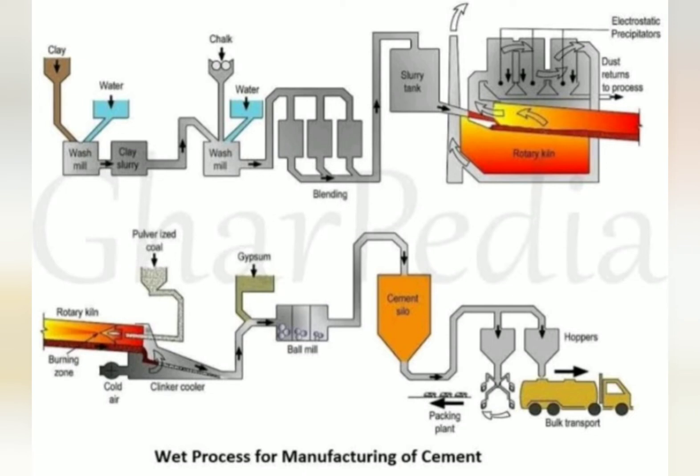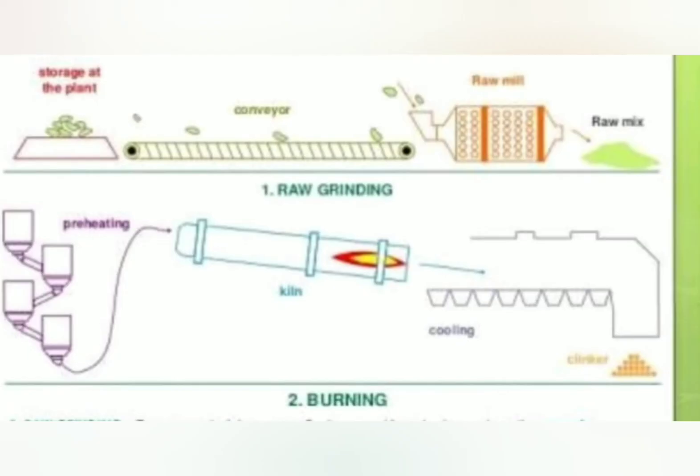The next operation is burning. We store the material and then use a kiln. This is a rotary kiln — a steel cylinder that is 250 to 300 cm in diameter with an excellent length of 120 meters.